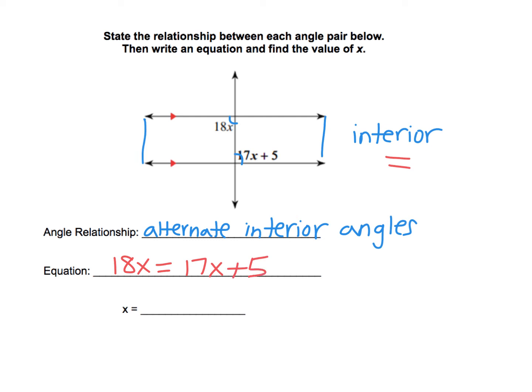And now we're going to go ahead and do our algebra. So I'm going to move off to the side here. If 18x is equal to 17x plus 5, let's start by moving all the x's to one side of the equation. I'm going to subtract 17x from both sides. And that gets us down to 1x equals 5. 1x is the same as x. If we divide by 1, 5 divided by 1 is still 5. So x is equal to 5 is our answer.